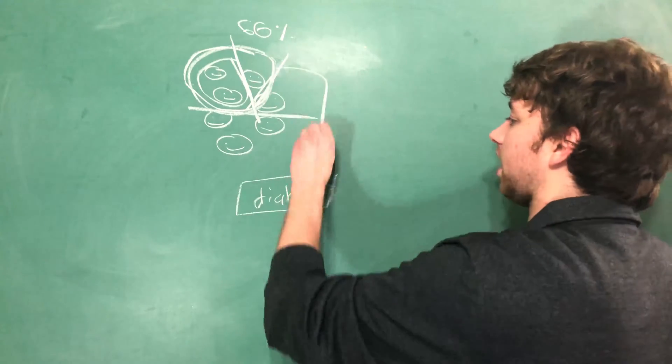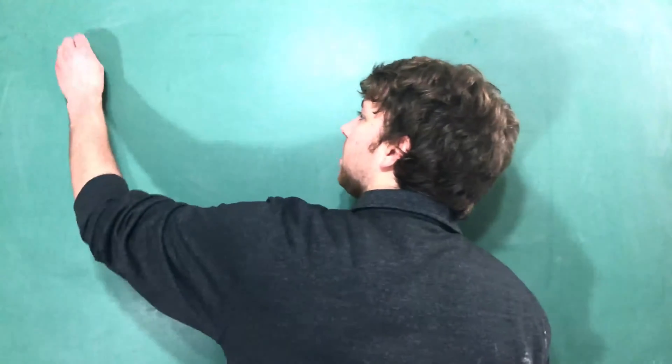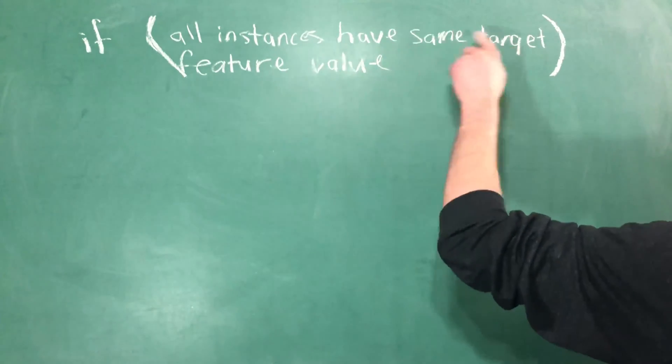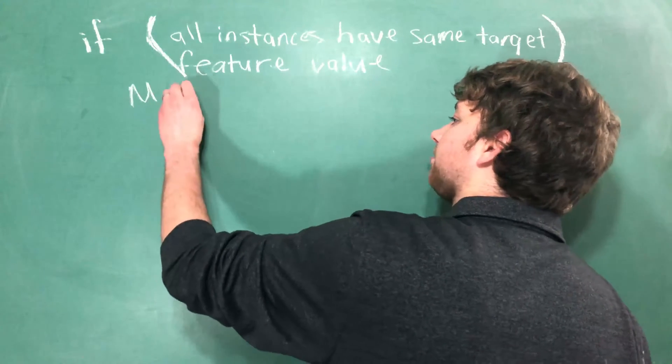So we would say if you're in this group you're more than likely going to have diabetes. So let's write that out. We can make an if statement and this is going to be inside of the function that we call. If all instances have the same target feature value, we're going to make a leaf node with that value.